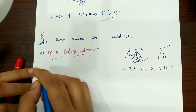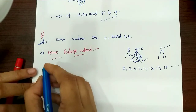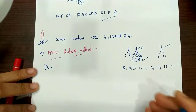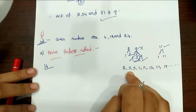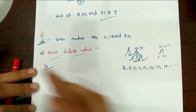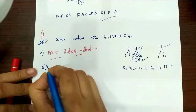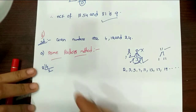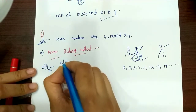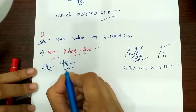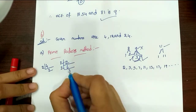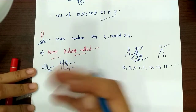Now we will do LCM find out. First is 4 LCM find out. We divide by the next prime number. 2 divided into 4 gives 2, 2 into 2 is 4. Next, 2 to divide 12: 2 into 6 is 12. Next, 2 into 3 is 6. So 3 ones — just leave it to the left.